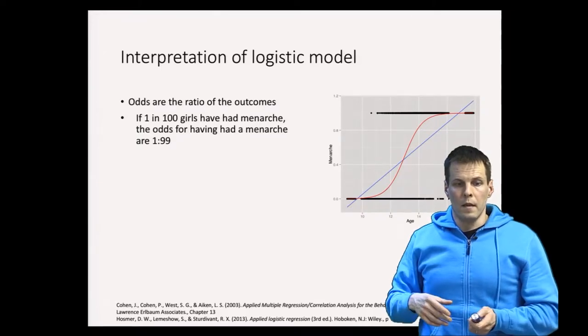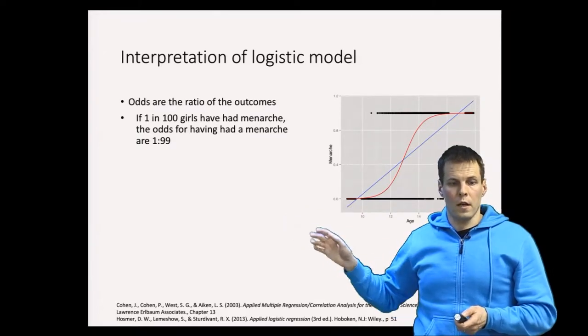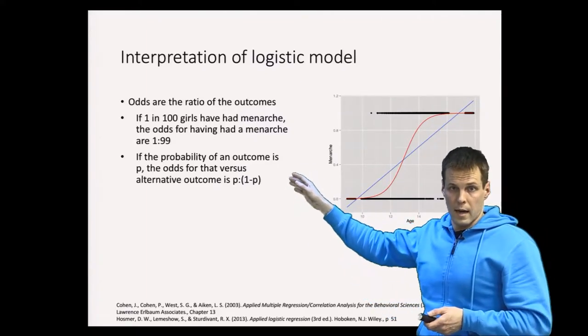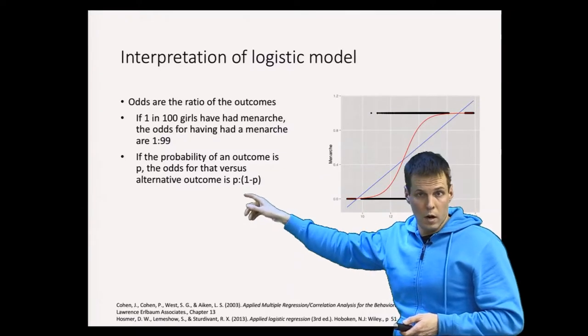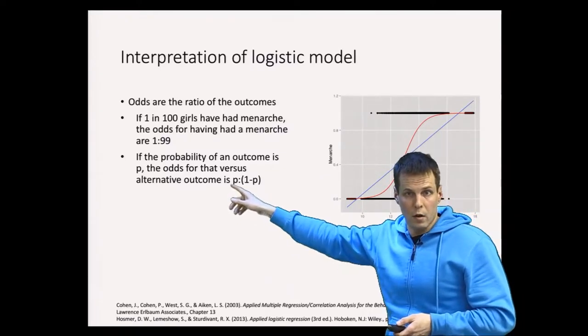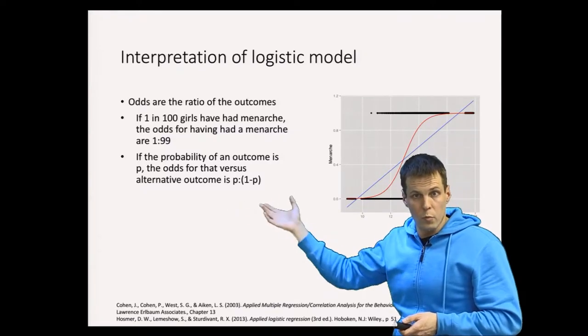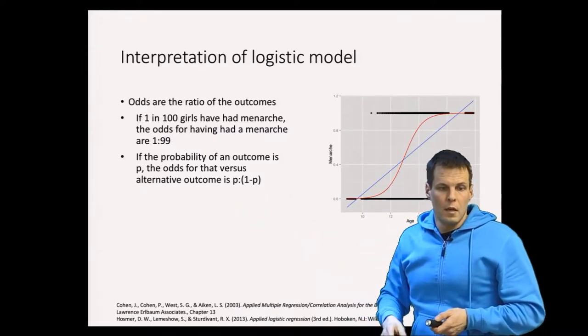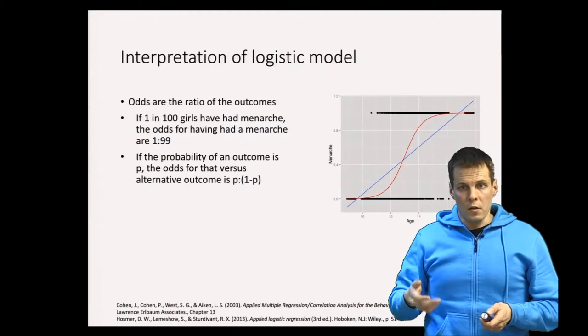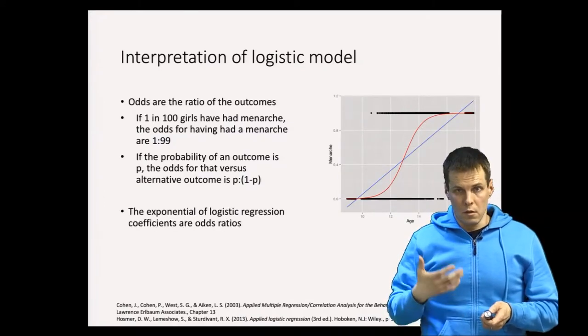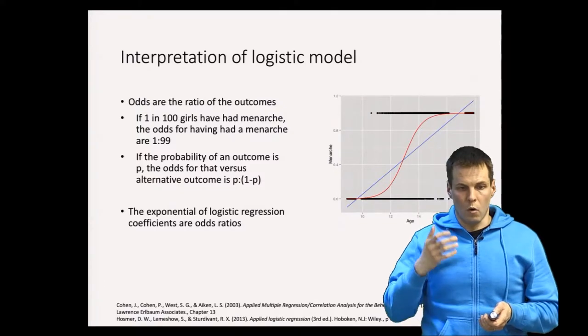And more formally, if the probability of an outcome is p, then the odds is defined as p against one minus p. So it's a probability of one outcome divided by probability of another outcome if you have only two possible outcomes. And if you exponentiate the logistic regression coefficients, those can be interpreted as odds ratios.